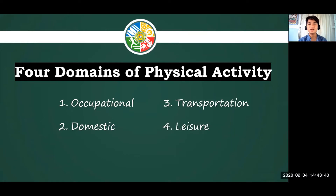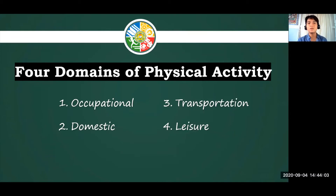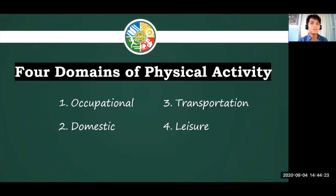Leisure is a very familiar term — it talks about our free time or vacant time. What do we do during our vacant time? It could be playing sports, playing video games, reading, or watching television. During our vacant time, we can perform lots of movements. To summarize: occupational refers to movements related to our role in society; domestic refers to movements we do at home; transportation refers to movements we do to travel; and leisure refers to movements we do during our free time.